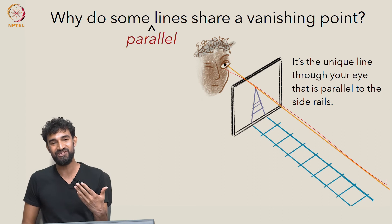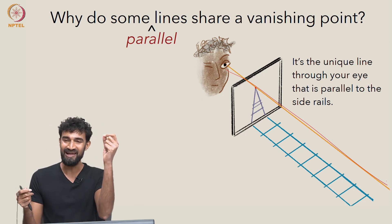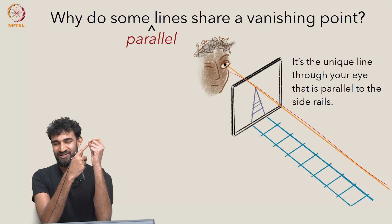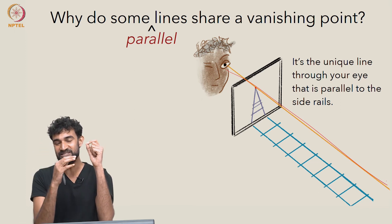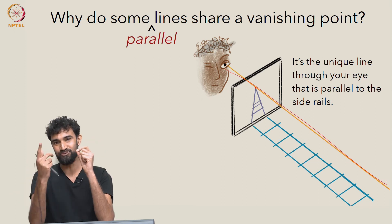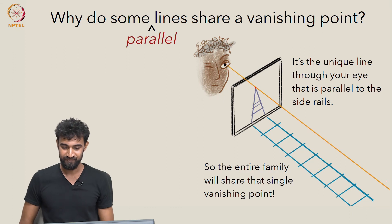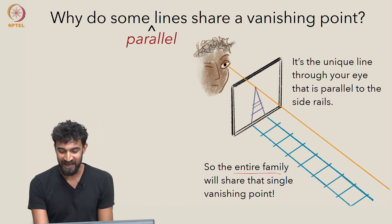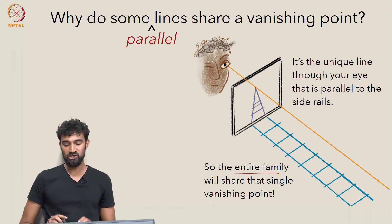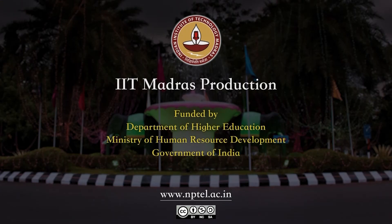If you remember your Euclidean geometry: given any line and a point not on the line, there's a unique line that is parallel to your original line running through that point. So as a result, the entire family will share that single vanishing point.